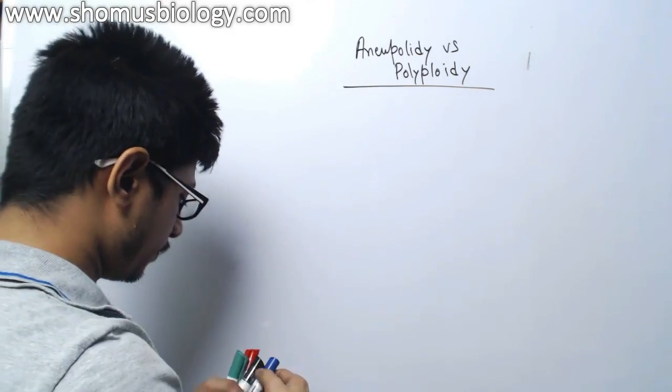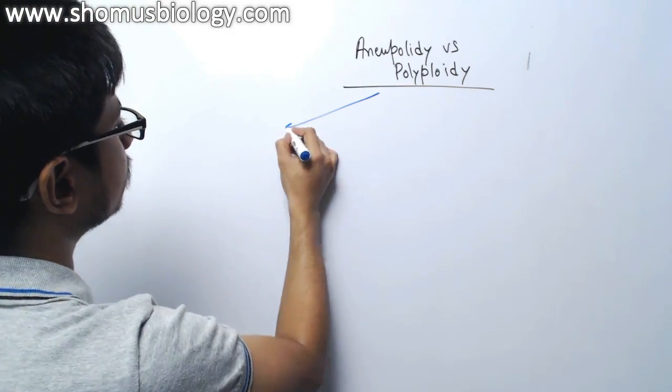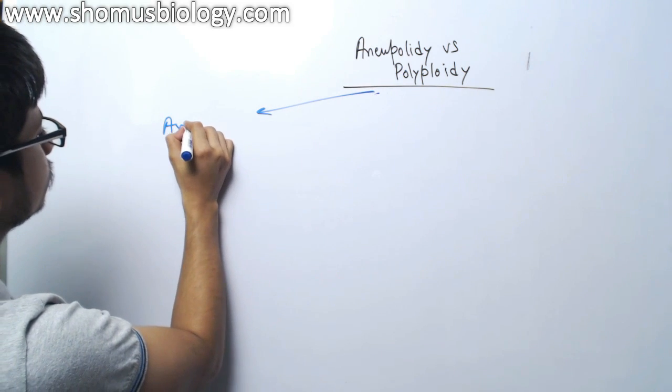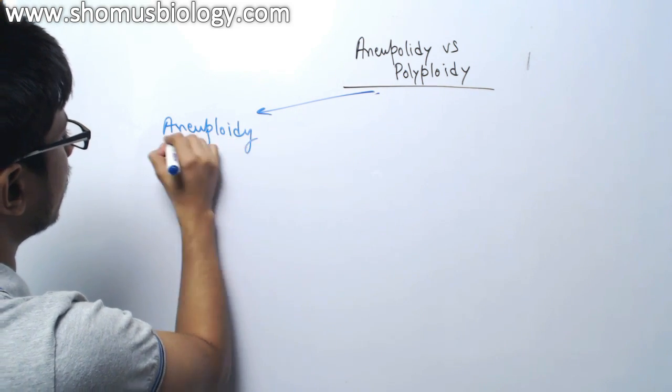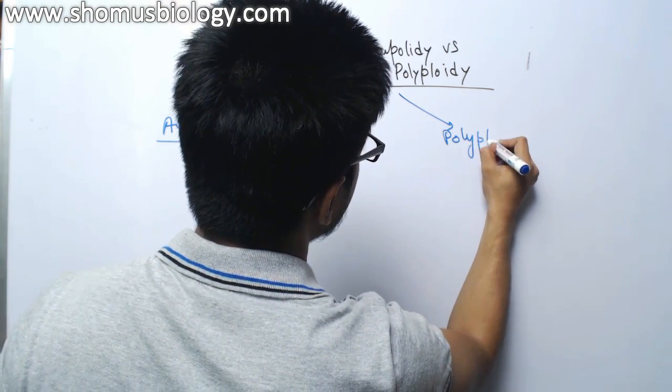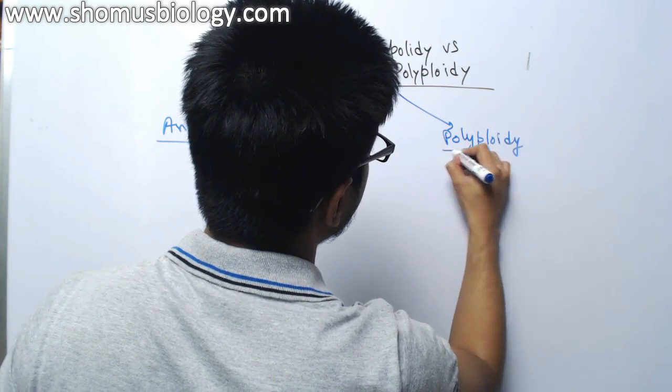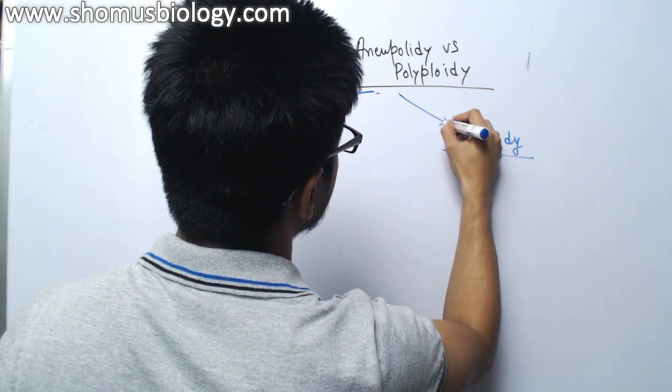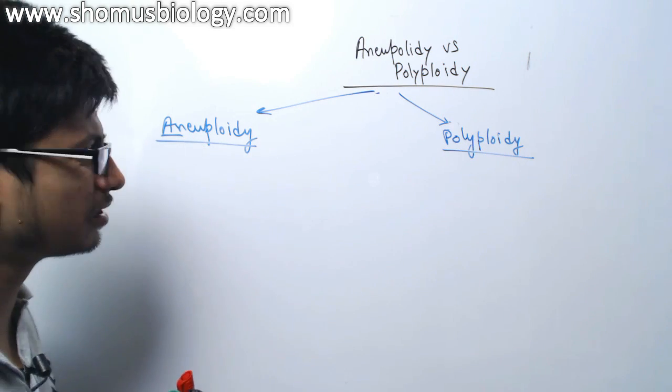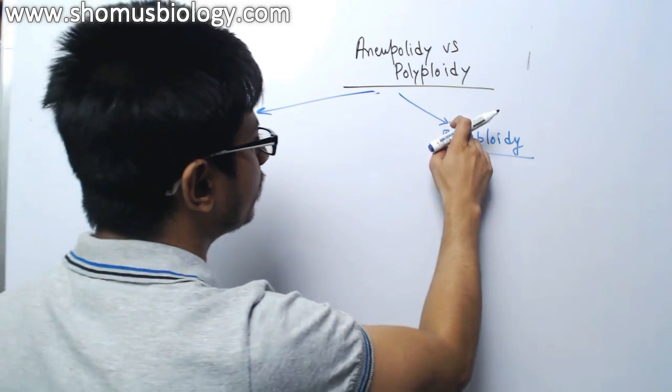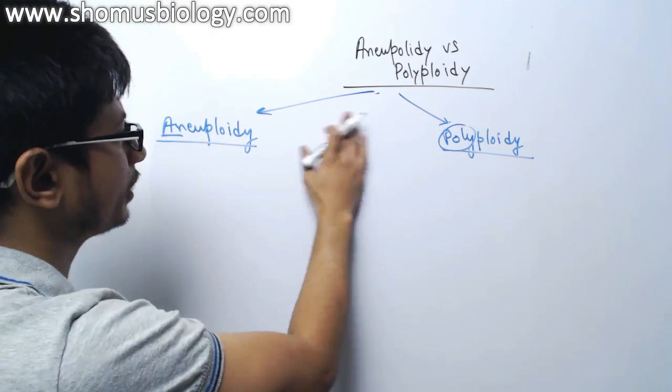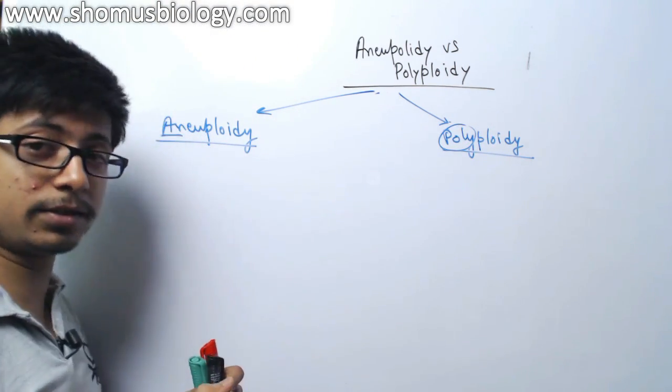Let me break them down into two parts, aneuploidy and polyploidy. If we just focus on the names, it is going to give us some idea about the topic. Aneuploidy means something with deletion, while polyploidy means something with poly means multiple, increment in the multiple number.